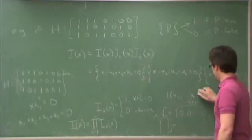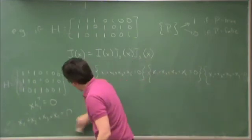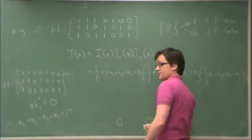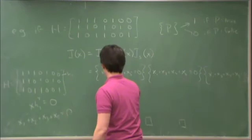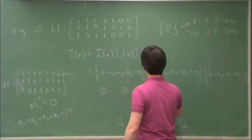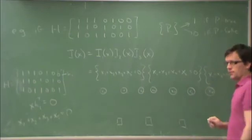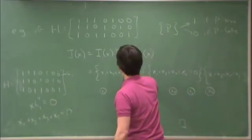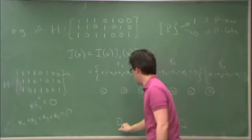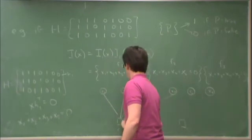So now I can write, I can draw a factor graph. I have three factors, and I have seven variables. I call this factor 1, f1, f2, and f3. f1 is a function of x1, x2, x3, and x5.